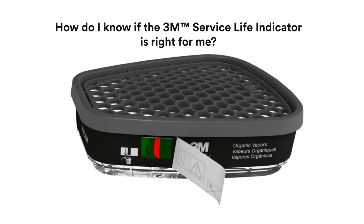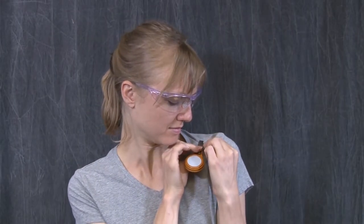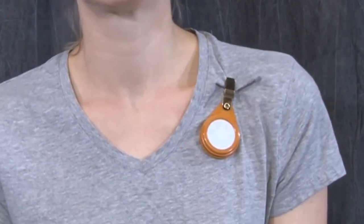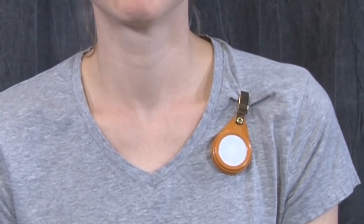In order to rely on the End of Service Life Indicator as a primary method for determining when to change cartridges, you need to know your organic vapor exposure levels. 3M organic vapor monitors are a simple way to sample many, but not all, organic vapors.